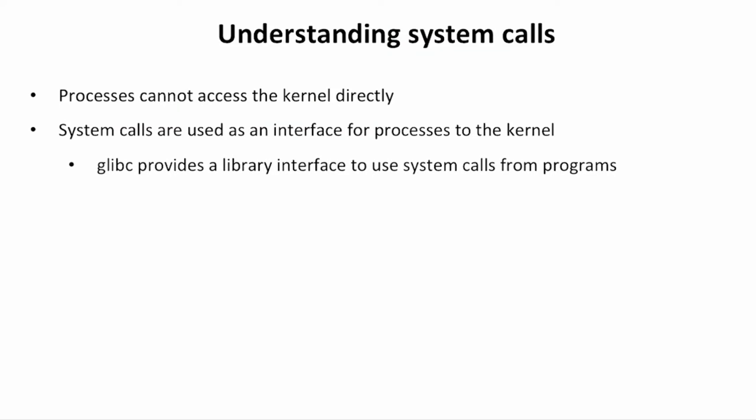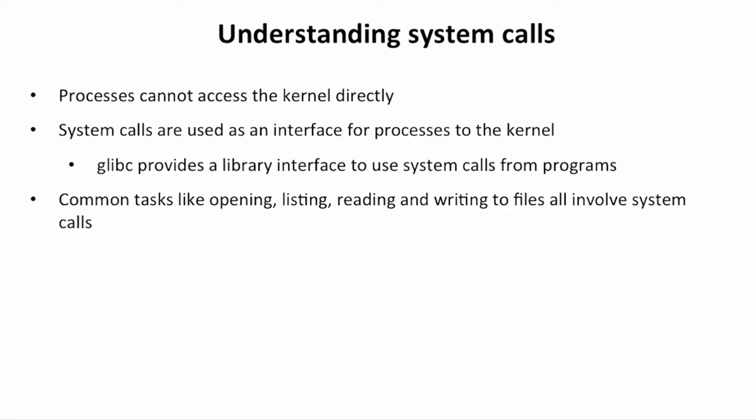Glibc provides this library interface to use the system calls. Common tasks like opening, listing, reading, and writing to files all involve system calls. Basically, in our previous example of what is happening when the cat command is reading contents of a file, a lot of system calls are going to happen, and I will show you that later using the strace utility.